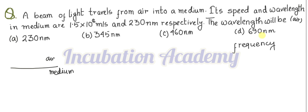When the light ray enters from one medium to another medium, one property of the light ray does not change, and that is frequency. If I denote this frequency as ν, then for air we can write: c, which is the velocity of light in air or vacuum, is equal to ν multiplied by λ (in air). And in the medium, we can write: v equals ν multiplied by λ_m.